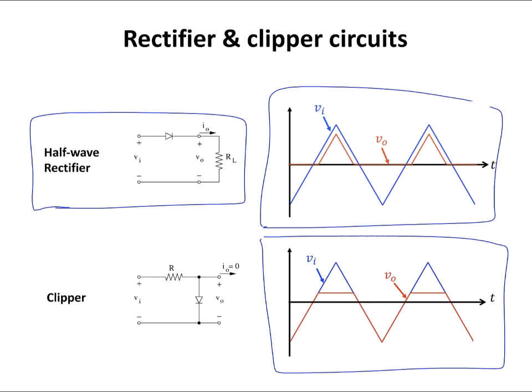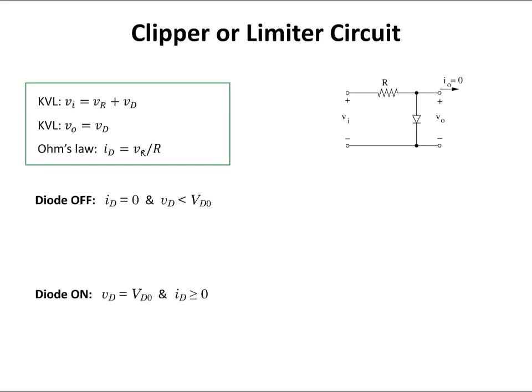This clipper circuit clips the input signal at a certain threshold value. In other words, this circuit doesn't allow the output to go beyond a certain threshold value. At that threshold value, the output is going to be a constant value — the output signal does not increase beyond that threshold value. We are ready to solve this clipper or limiter circuit and find the output versus input.